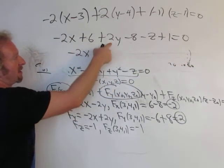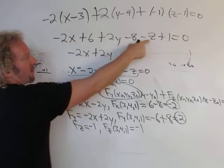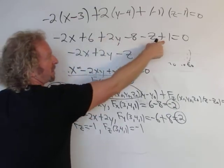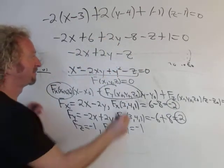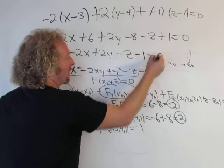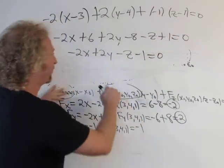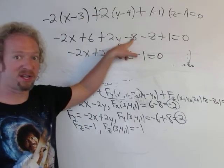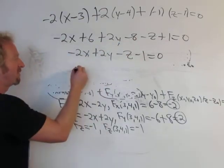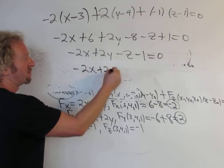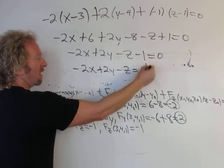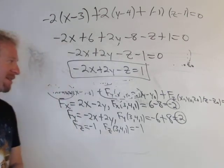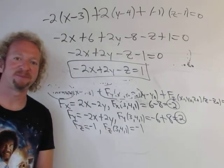Combining like terms: we have -2x, then 2y, then -z, and for the constants 6 - 8 + 1 = -1. So we get -2x + 2y - z - 1 = 0. Moving the -1 to the other side, the final equation of the tangent plane to our original function at the point (3,4,1) is: -2x + 2y - z = 1.